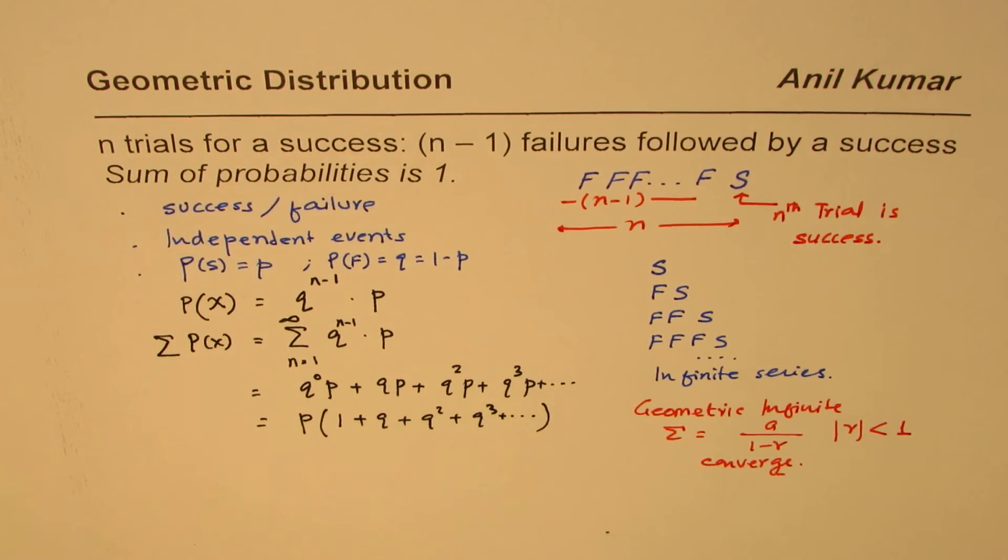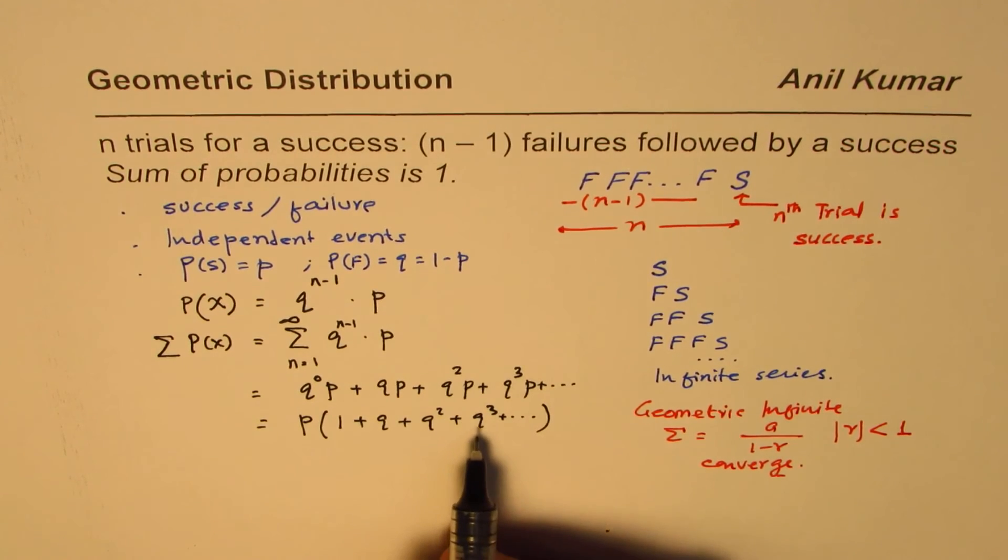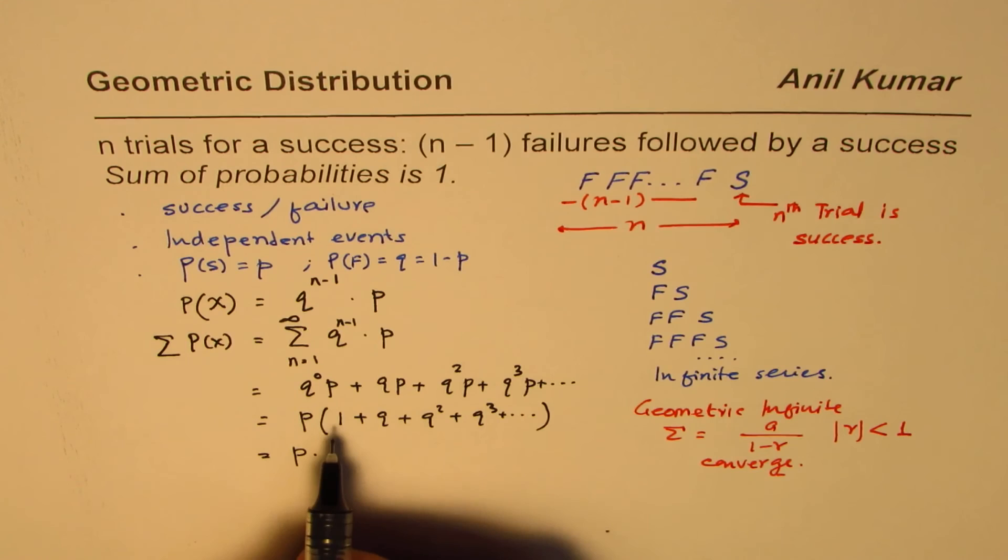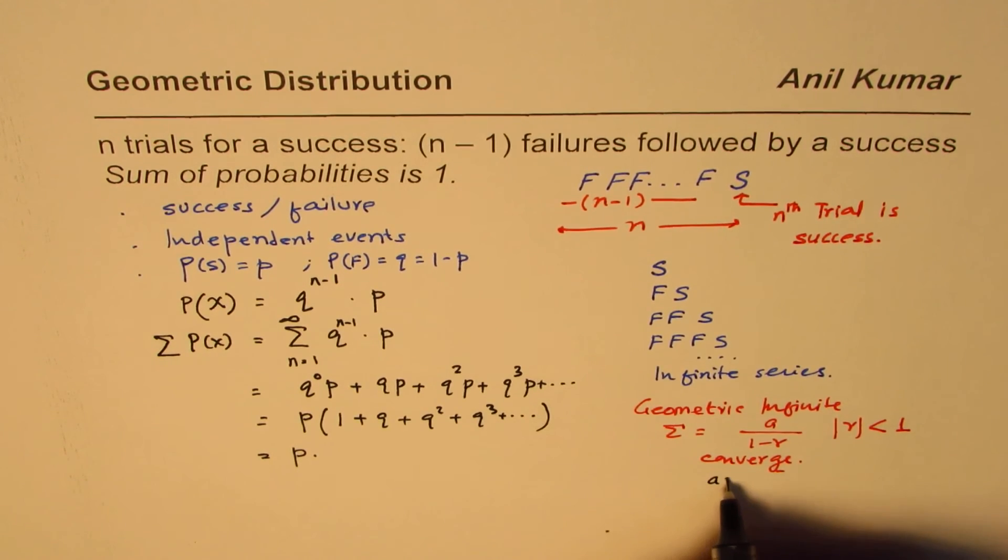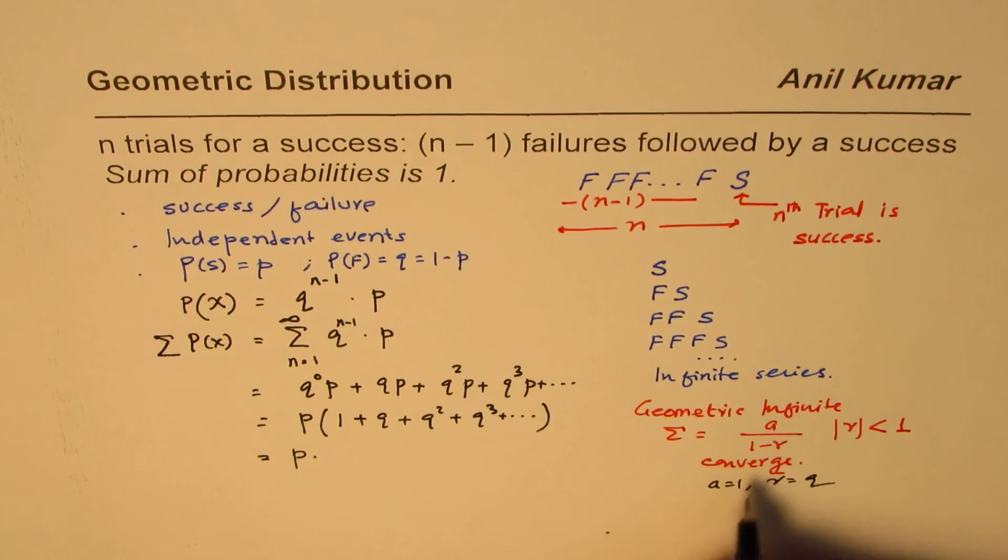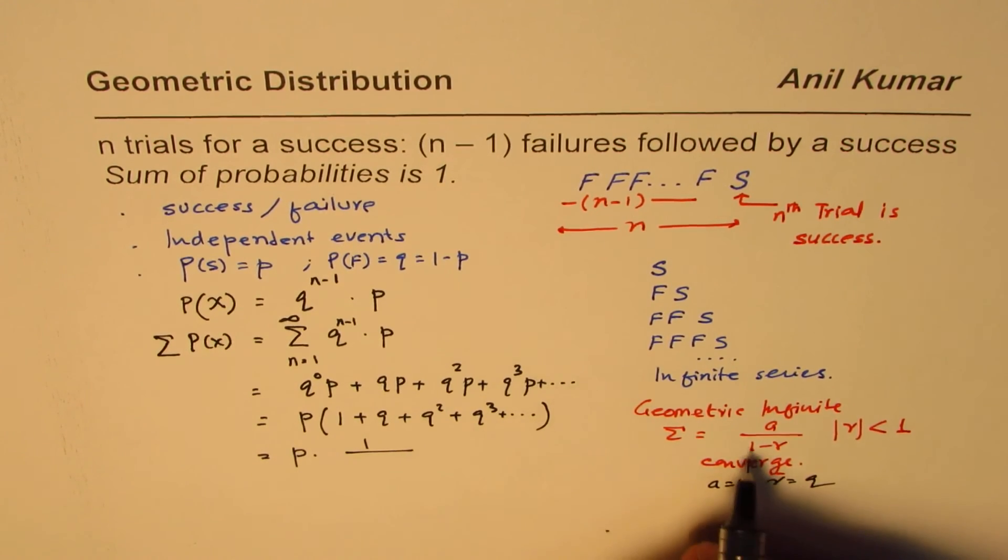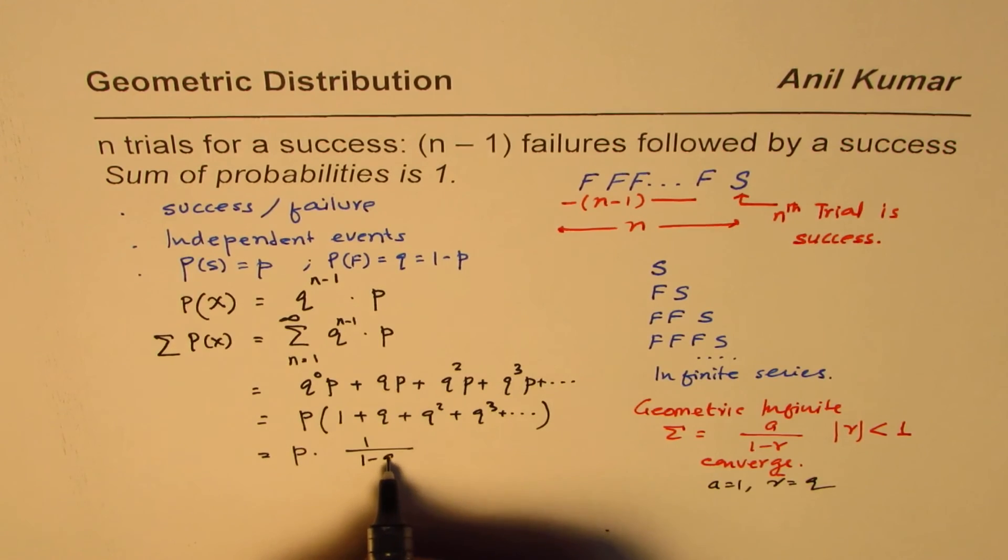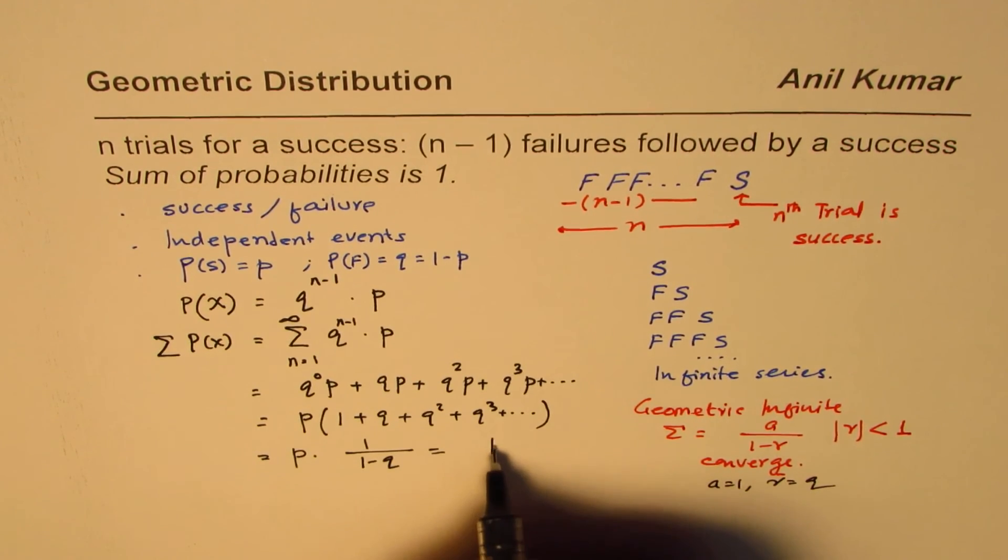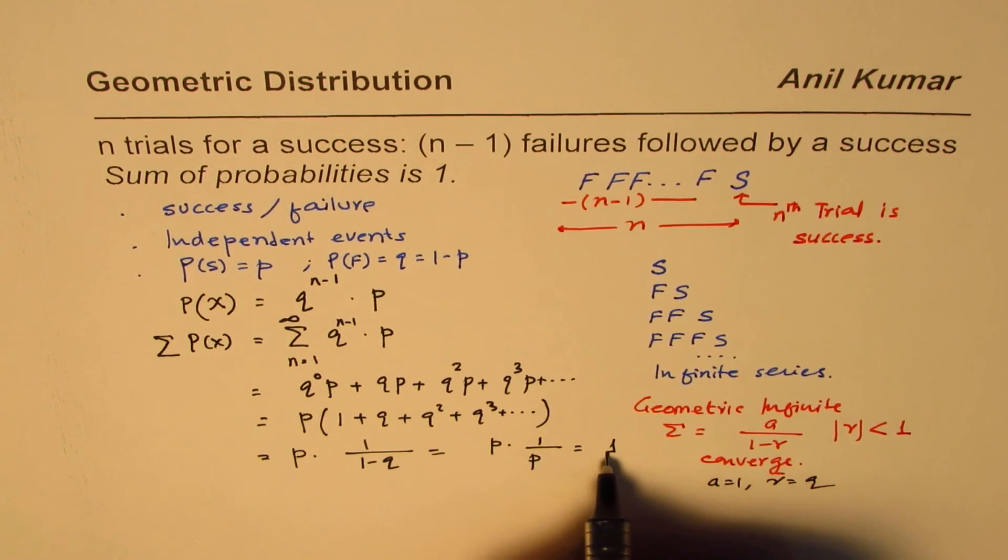In this case, we know q, q plus p is 1, so q is less than 1. So therefore, we can write this as p times. What is the a value? a is 1 for us. In our case, a equals to 1, r equals to q. So when I substitute that, I get 1 over 1 minus q. Now, 1 minus q is p, so get p times 1 over p, and that is indeed equals to 1.